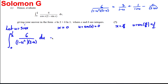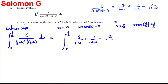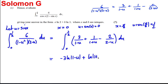By part b, I write the integrand in partial fractions: the integral from 0 to 1/2 of [3 over (1−u) plus 1 over (1+u) minus 2 over (2−u)] du. Integrating gives: −3 ln|1−u| plus ln|1+u| plus 2 ln|2−u|, evaluated between 1/2 and 0.